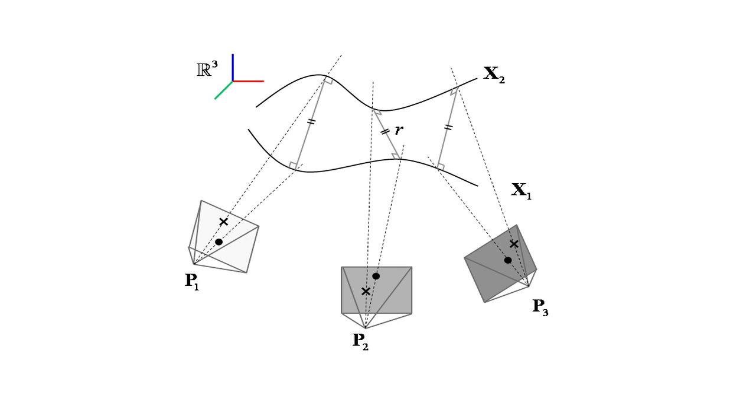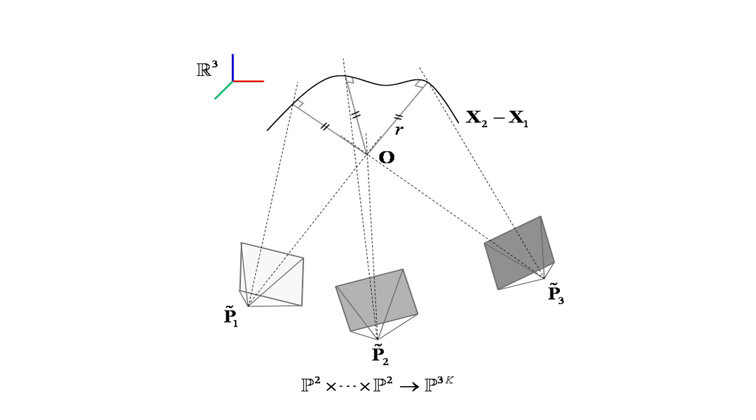Our method is based on the 3D reconstruction of the relative trajectory. Let X1 and X2 be two articulated trajectories that are projected in multiple cameras. By transforming the parent trajectory X1 to the origin,